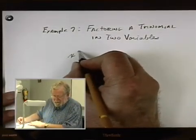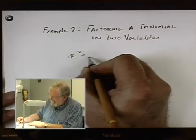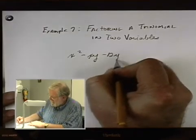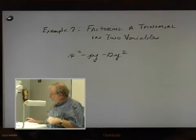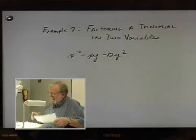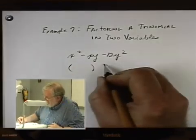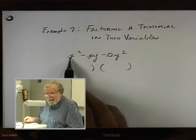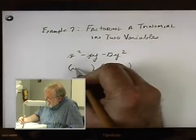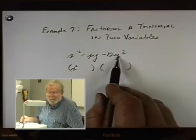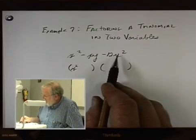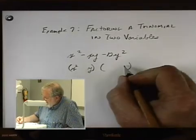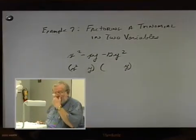x squared minus xy minus 12y squared. All right. We're going to do this the same way, only here we know we're going to multiply x times x to get x squared. Now we have a y squared here. So we're going to have to multiply y times y to get that y squared. So we'll put a y here.